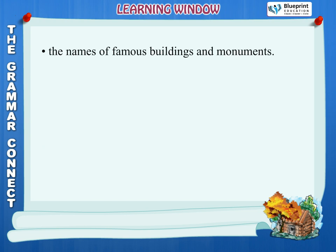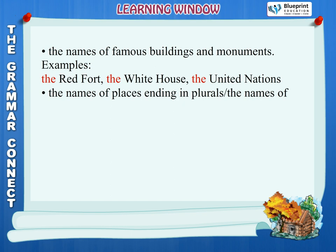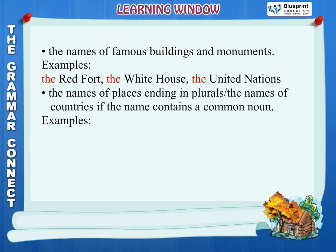The names of famous buildings and monuments. Examples: the Red Fort, the White House, the United Nations. The names of places ending in plurals, or the names of countries if the name contains a common noun. Examples: the Netherlands, the United States.